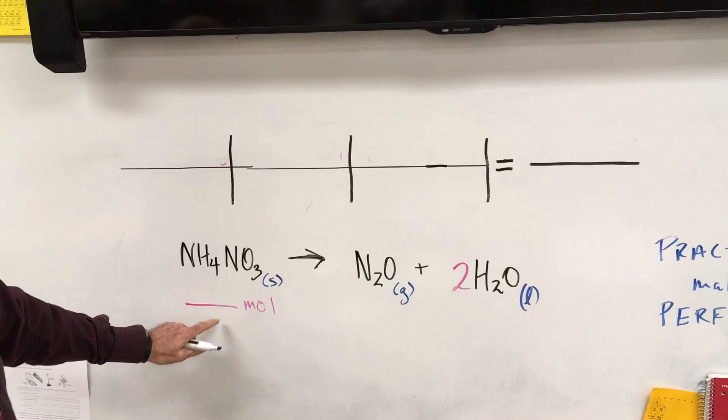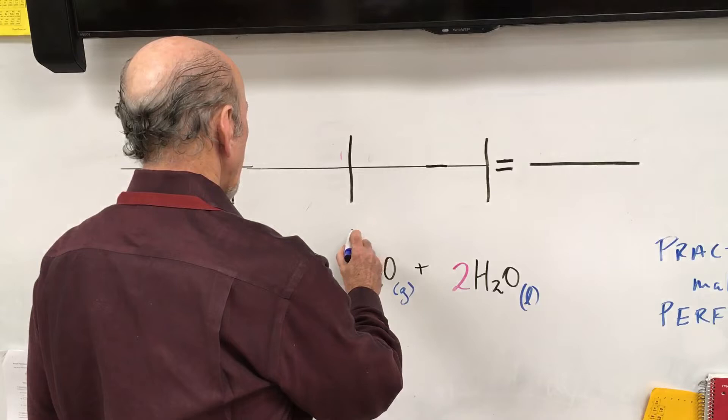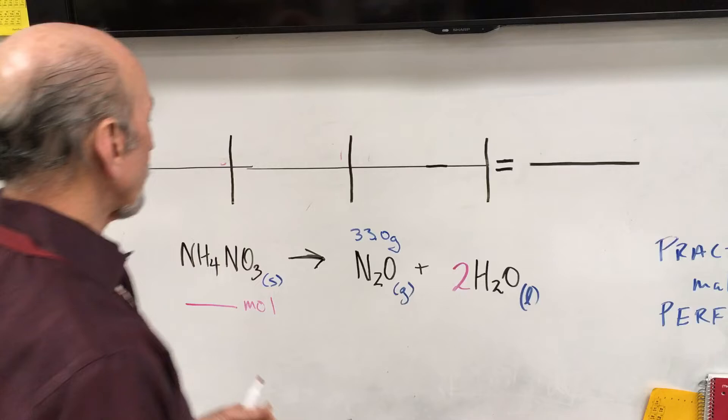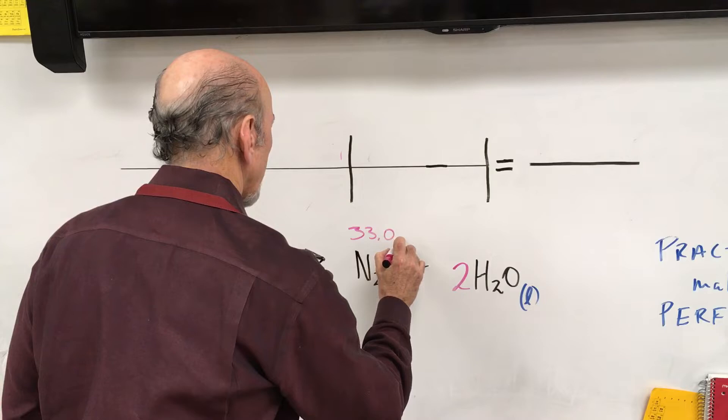How many moles of ammonium nitrate do you need to decompose in order to get 33.0 grams of the dinitrogen monoxide? Okay, so 33—that's our starting point, 33.0 grams of the dinitrogen monoxide.